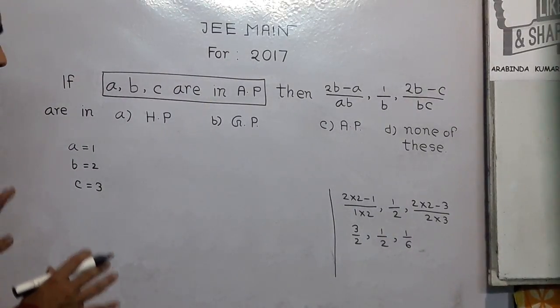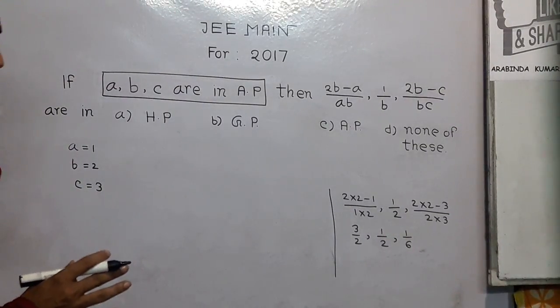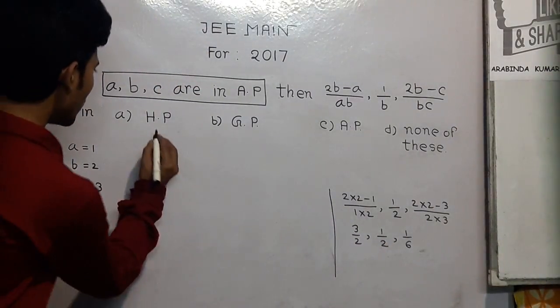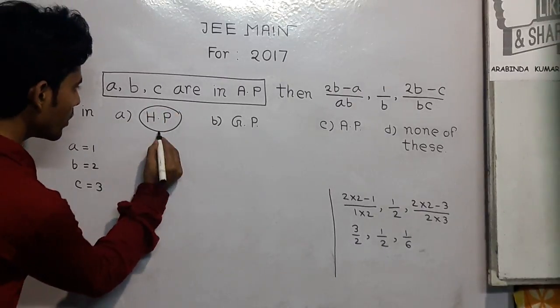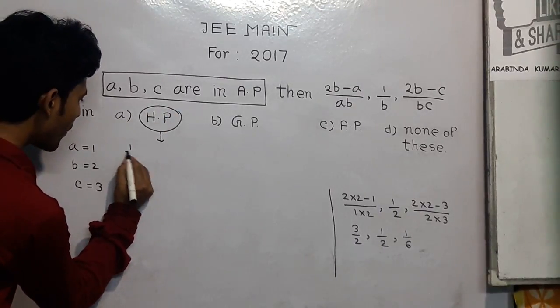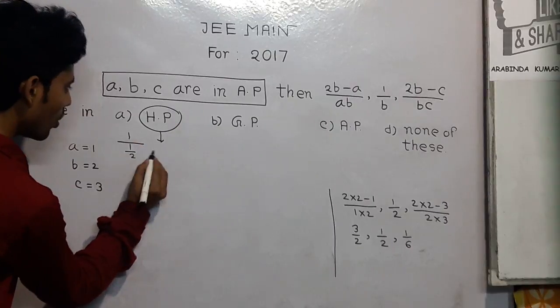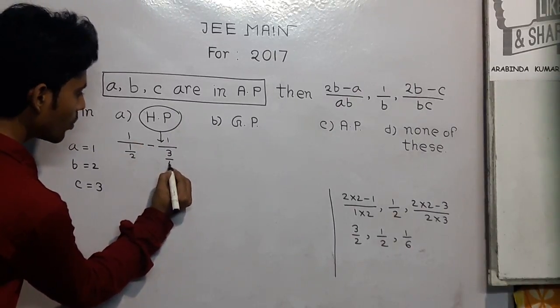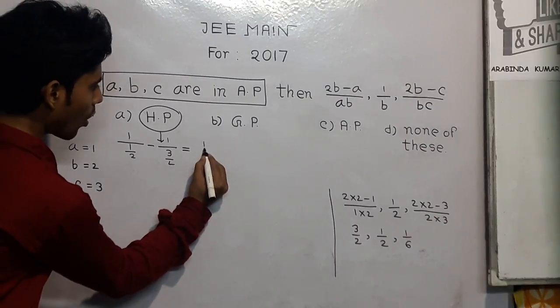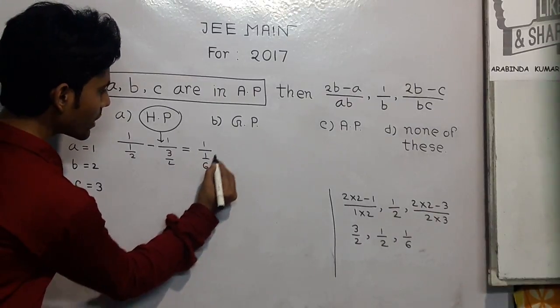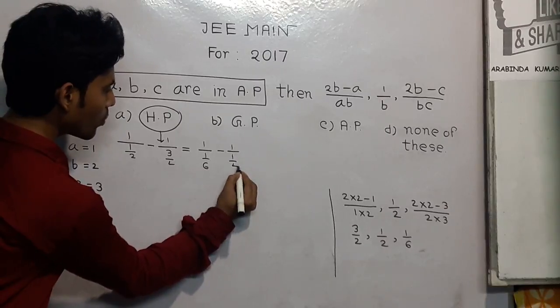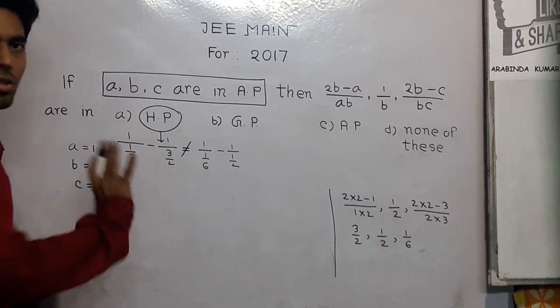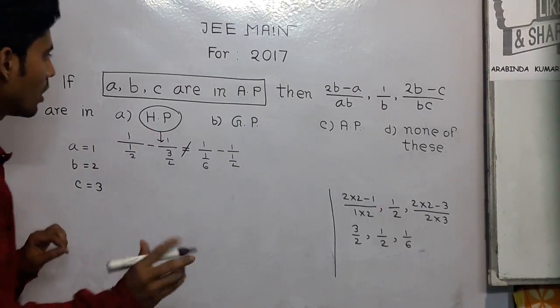Now, we easily see that if 3 numbers are in HP, then 1 upon 2 minus 1 upon 3 by 2 must equal 1 upon 2, must equal 1 upon 1 by 6 minus 1 upon 1 by 2. But this is not correct. So option A is not right.